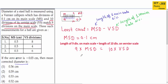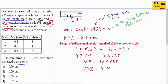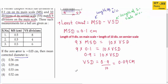Since MSD is 0.1 cm, we get: 9 times 0.1 equals 10 times VSD, so 0.9 equals 10 times VSD, giving VSD equals 0.9 divided by 10, which is 0.09 cm. Now using the least count formula: least count equals MSD minus VSD equals 0.1 cm minus 0.09 cm, which gives us 0.01 cm. So the least count of this vernier calipers is 0.01 cm.